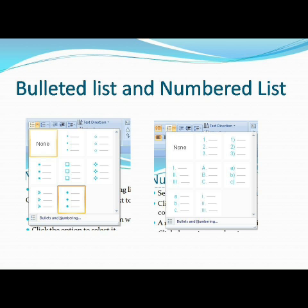Now we will look at the bulleted list and numbered list options. On the left, you can find the bulleted list — different symbols are there. And on the right side, you can find the numbered list: 1, 2, 3, A, B, C, D, Roman letters, small ABC, capital ABC, etc. So these are called as numbered list.